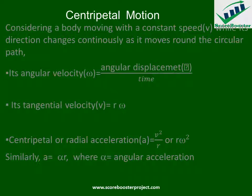Centripetal motion has to do with the movement of an object at a constant speed around a circular path. Considering a body moving with a constant velocity, we change its direction continuously as it moves around a circular path. Its angular velocity omega is given as angular displacement over time. Its tangential velocity phi is given as r times omega, where r is the radius and omega is angular velocity in radians per second.